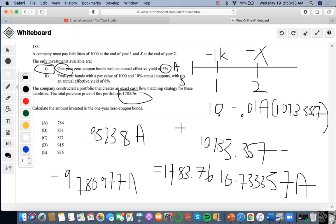We set it equal to the purchase price of the portfolio, 1783.76. So we're gonna move this to the other side. I'm gonna do 1783.76 minus 10733.357 and divide by negative 9.780977.